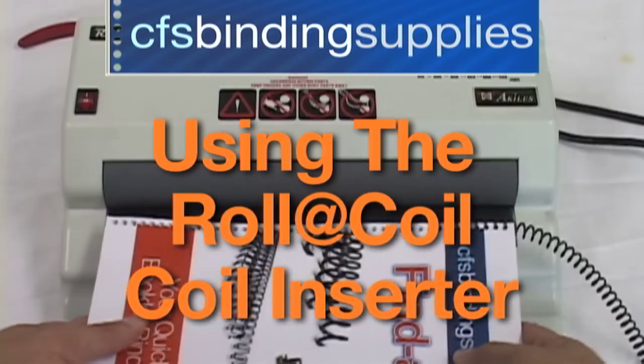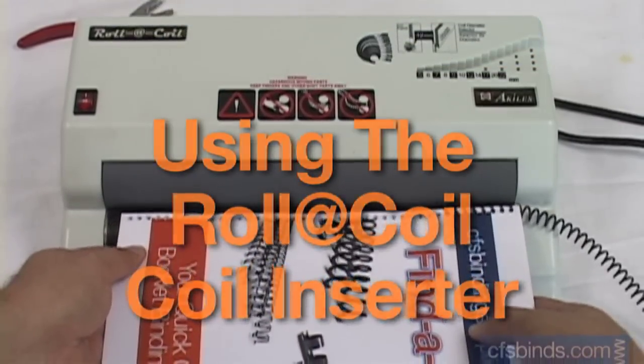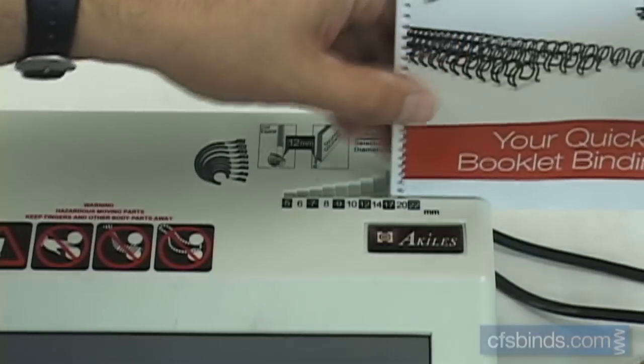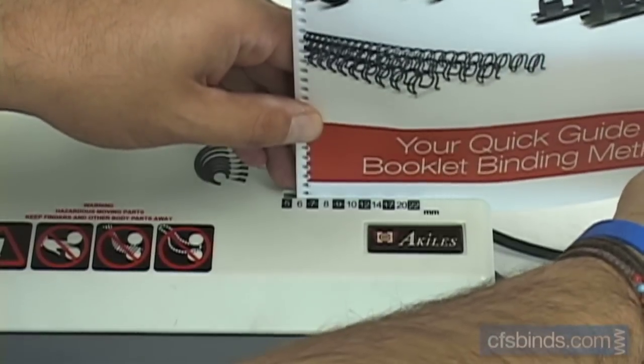Welcome to the Roll-A-Coil tutorial brought to you by CFS Binding Supplies. Start by turning the power switch on top of the machine. Slide your unbound booklet into the built-in thickness gauge to determine the right size of coil for your job.